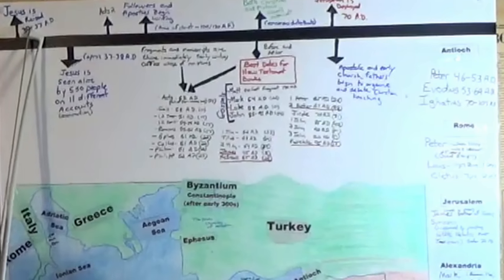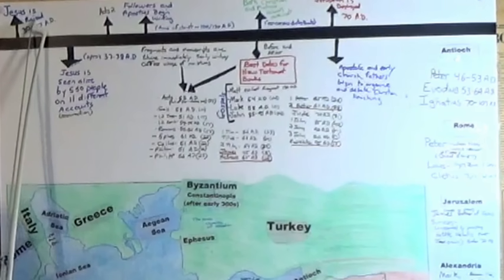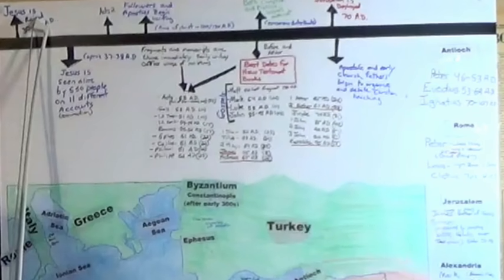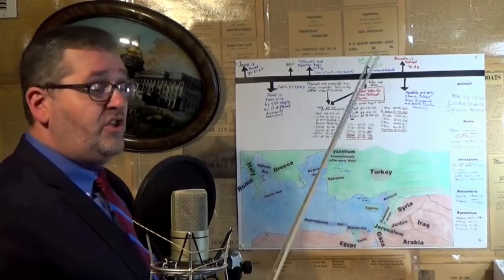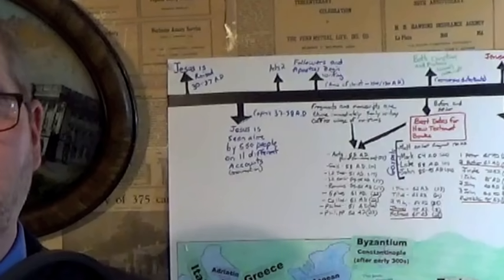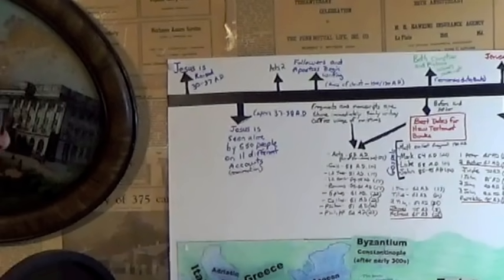Jesus Christ is believed to have died and risen sometime between 28 and 37 AD. Now, let's start with what the book of Acts and the Gospels tell us about what occurred. On 11 different occasions, Jesus Christ appeared to over 550 people in his resurrected form. This is what the Bible tells us.